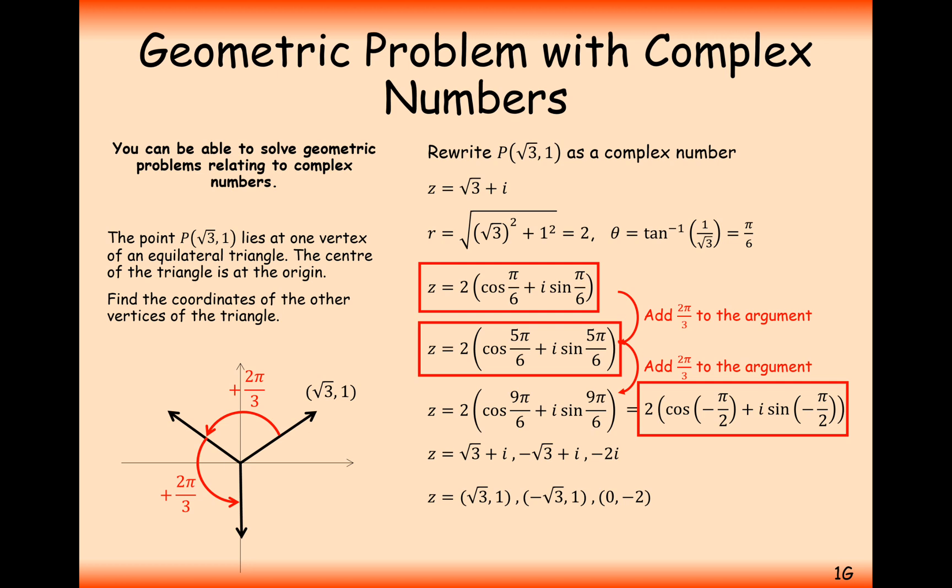We've found the other vertices of the equilateral triangle, (-√3, 1) and (0, -2), making ourselves a perfect equilateral triangle there.